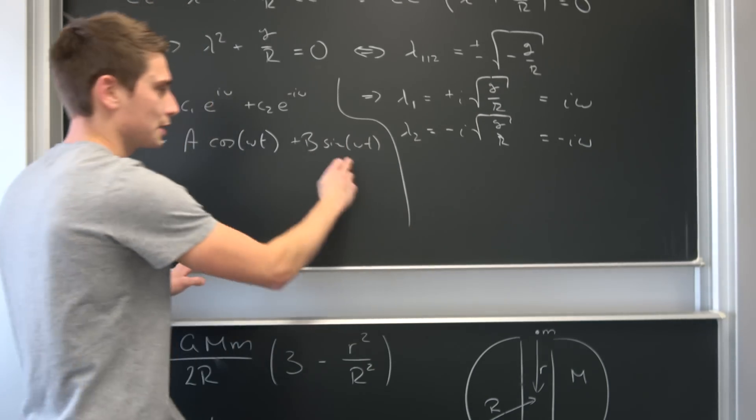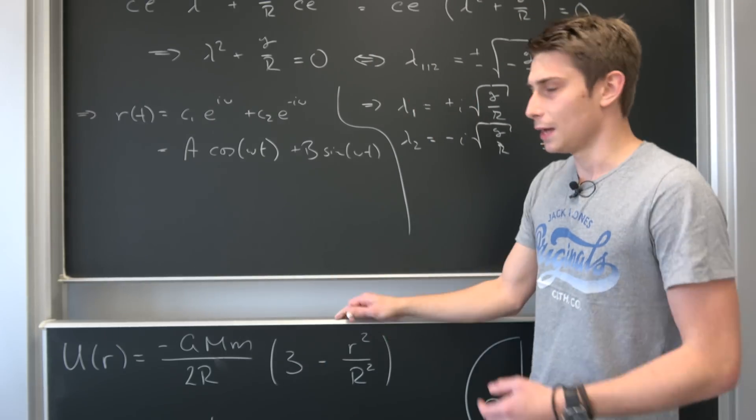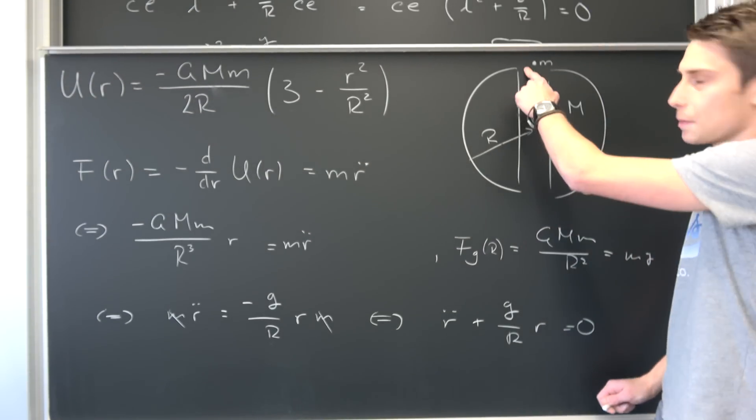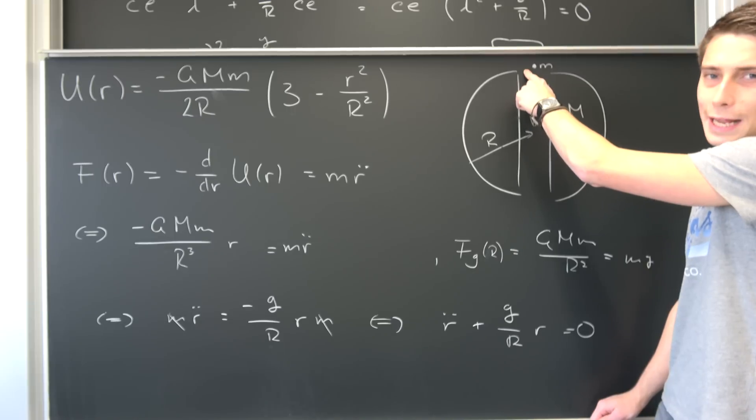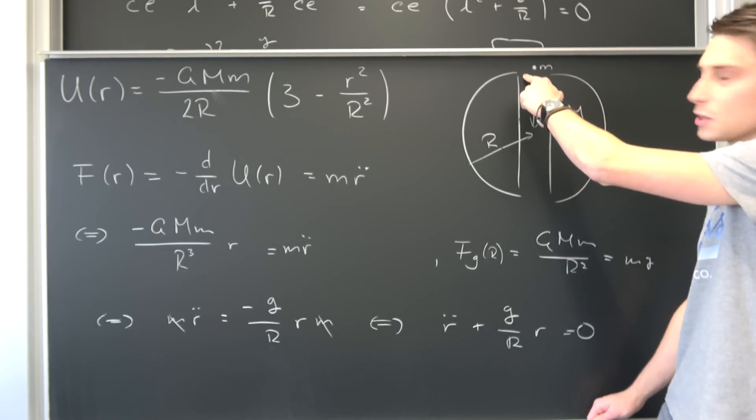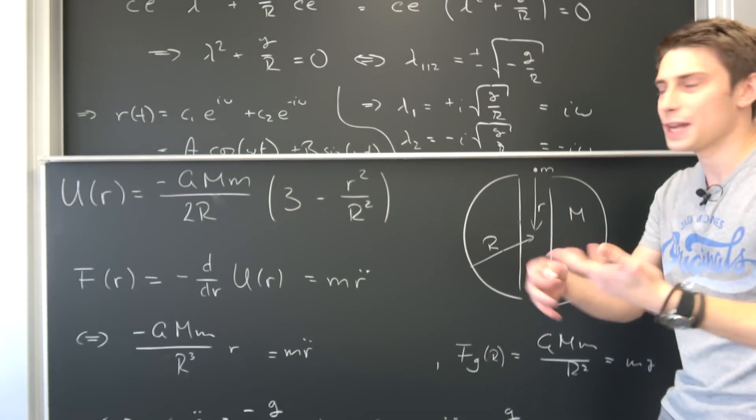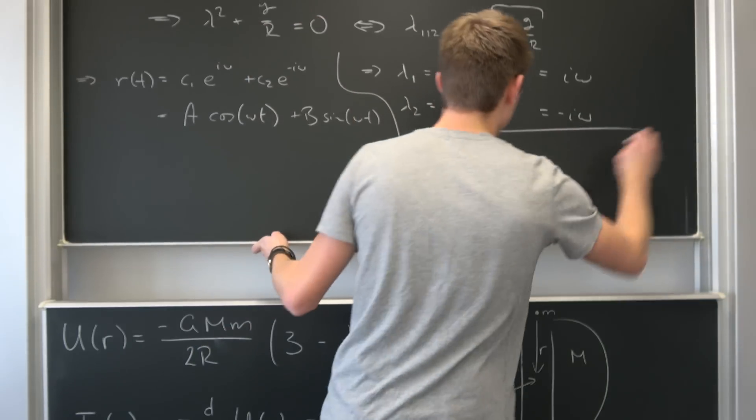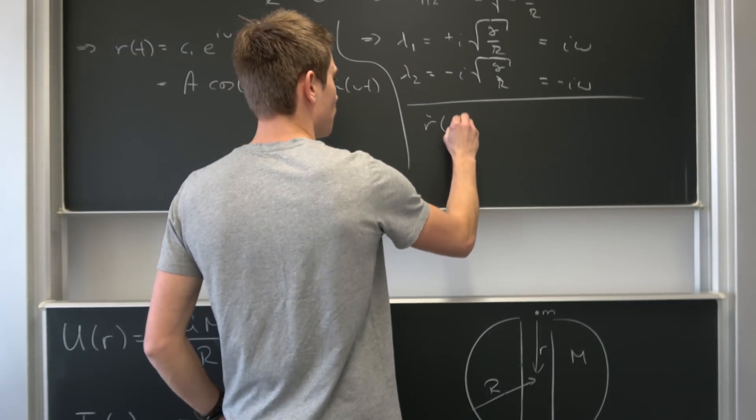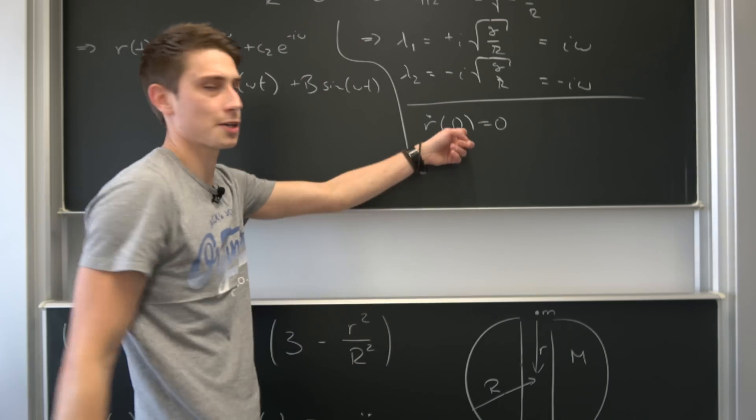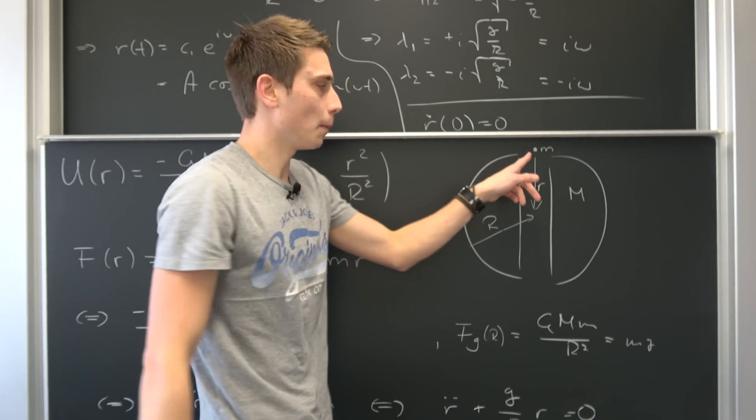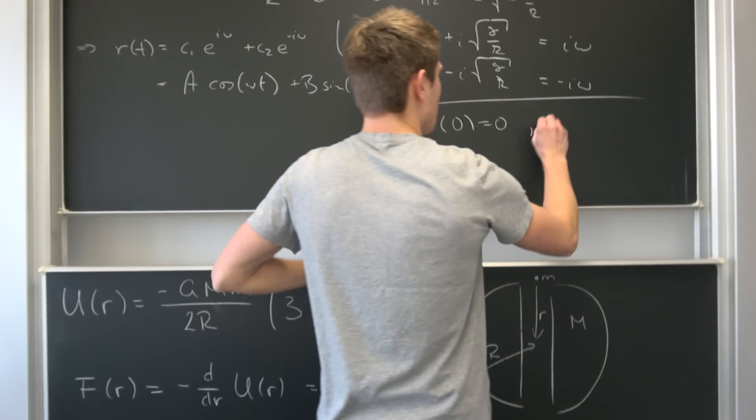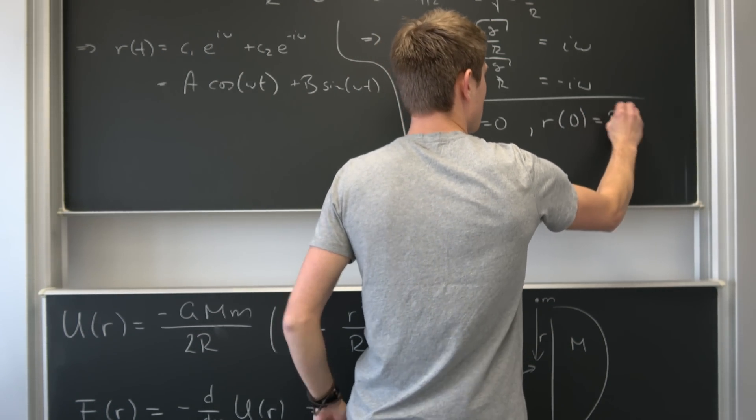And now let's think about what our initial values could possibly be. Well, if we start up here, we don't really have any velocity. We are standing on top, so we are not jumping at the beginning in the tunnel, only at the first second, for example. So our initial values, for example, r dot of zero is just zero. So our velocity at the start is zero. But also, if we stand up here, our position at the time zero is the whole radius of the earth. So we also know that r of zero is nothing but our whole radius.